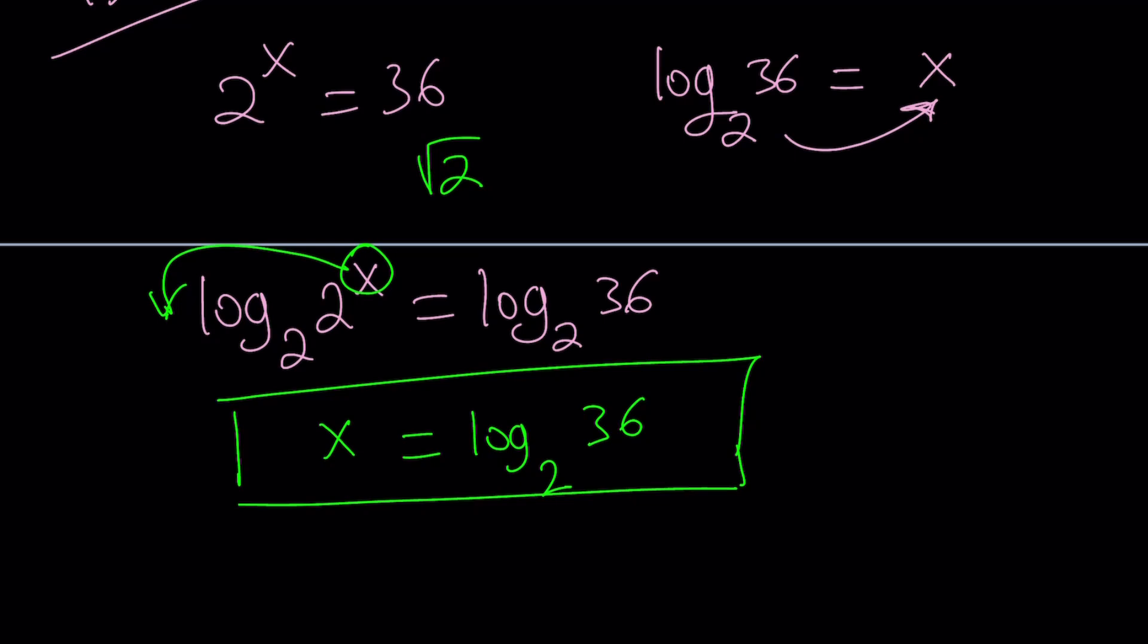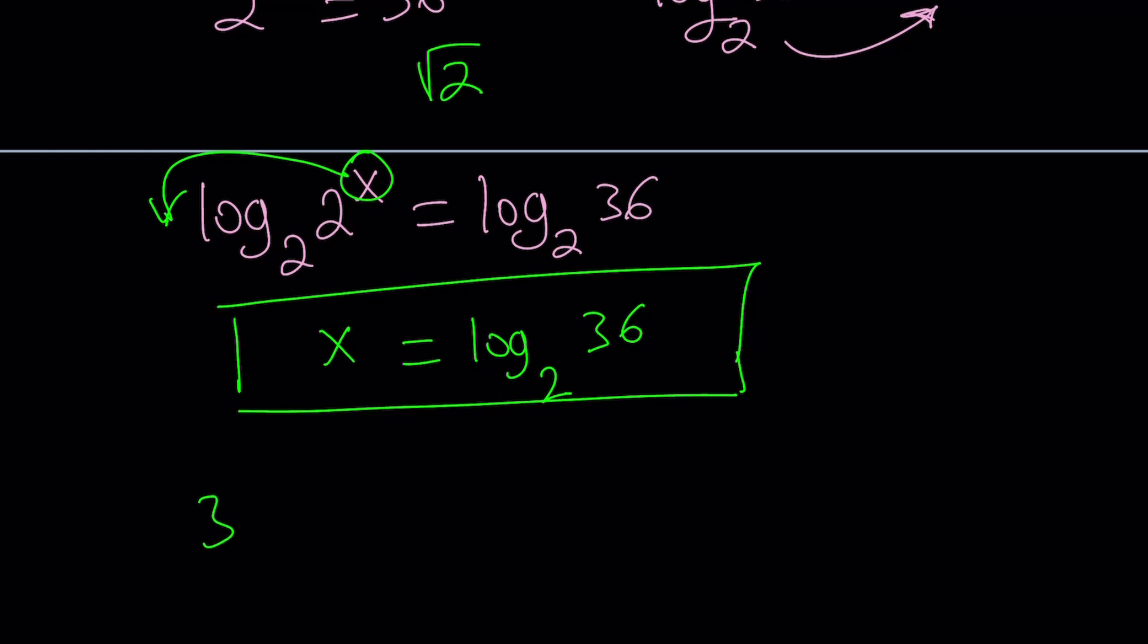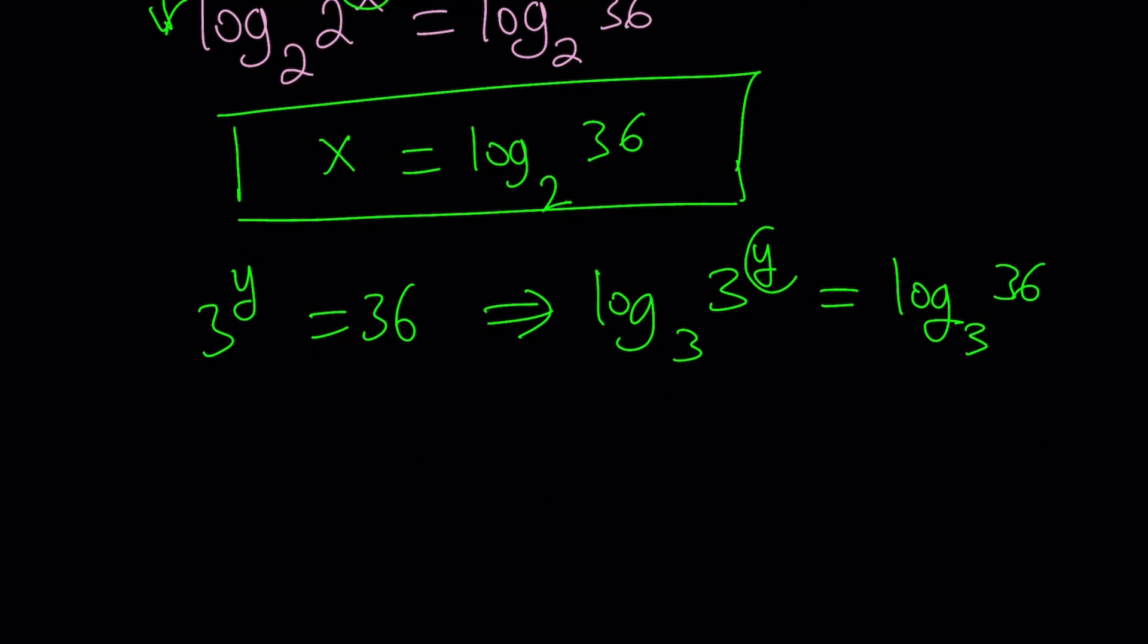Anyways, let's do the same thing for 3 to the power y. But similarly, it's going to be very similar. But this time, yes, it makes more sense if you use base 3. Absolutely, not base 2. I mean, you can stick with the same base, but I would argue that base 3 is better. And move the y. Y times log 3 with base 3, which is 1. Y equals log 36 with base 3.